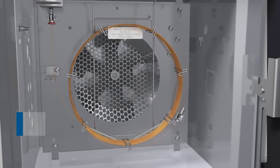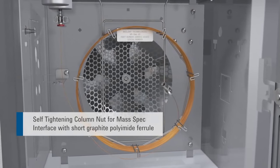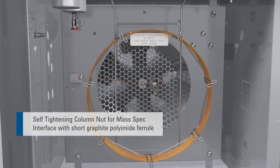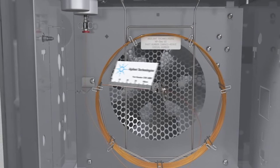The self-tightening nut is highly recommended for the Agilent mass spec transfer line. Finger-tight design prevents over-tightening damage. Be certain to have the correct length for the MS detector.